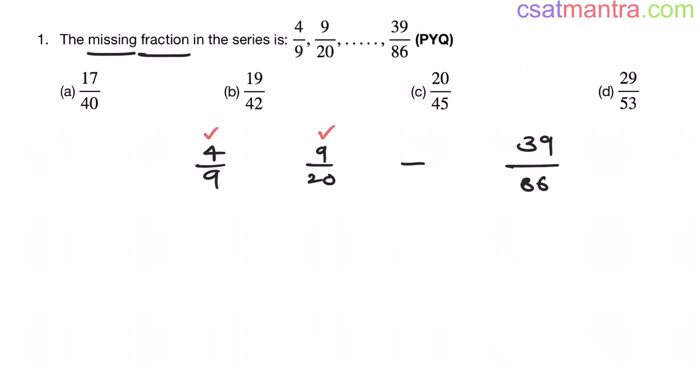Now second possibility. From 4 to 9, 9 is 4 into 2 plus 1, my friends. From 9 to 20, 20 is 9 into 2 plus 2. Now the numerator of next term would be 9 into 2 plus 1, my friends.